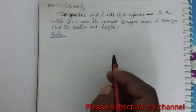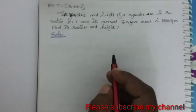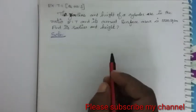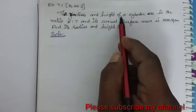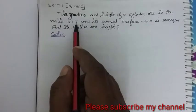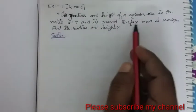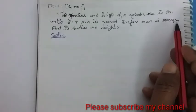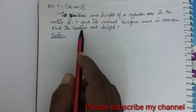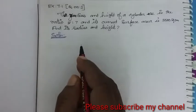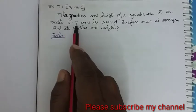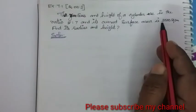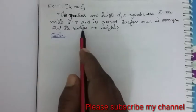Good morning students, today we are going to see about the topic of mensuration, standard 10, exercise 7.1. The radius and height of a cylinder are in the ratio 5 is to 7, and its curved surface area is 5,500 square centimeters. Find its radius and height.